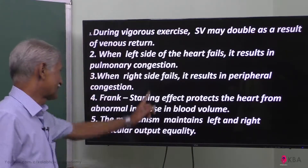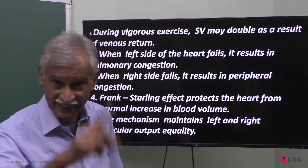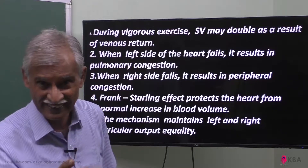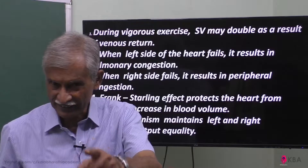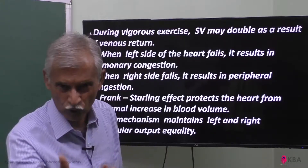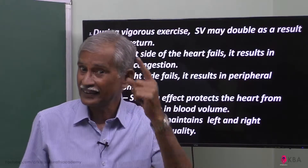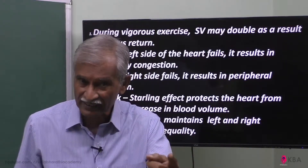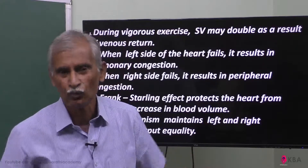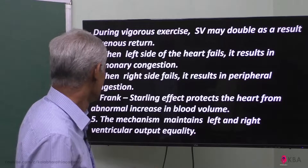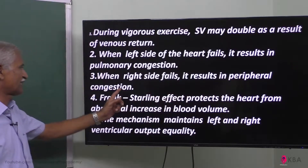When the right side fails — the right atrium and ventricle — there is blood stagnation, that is congestion, in the periphery of the body, mostly the legs. So when the right side fails, it results in peripheral congestion.